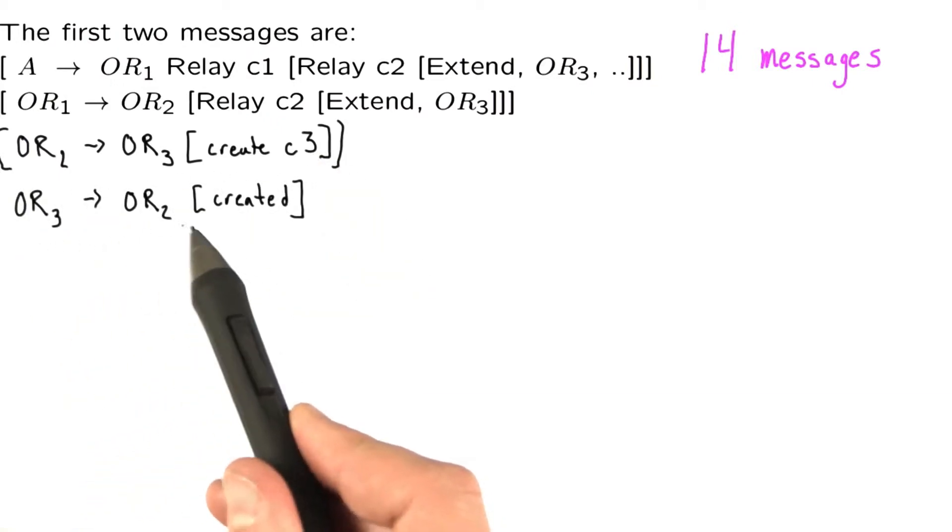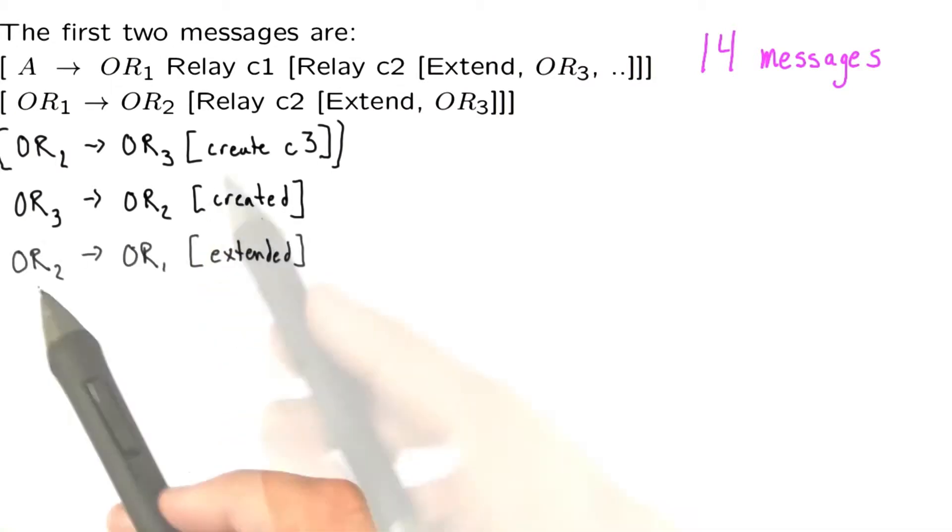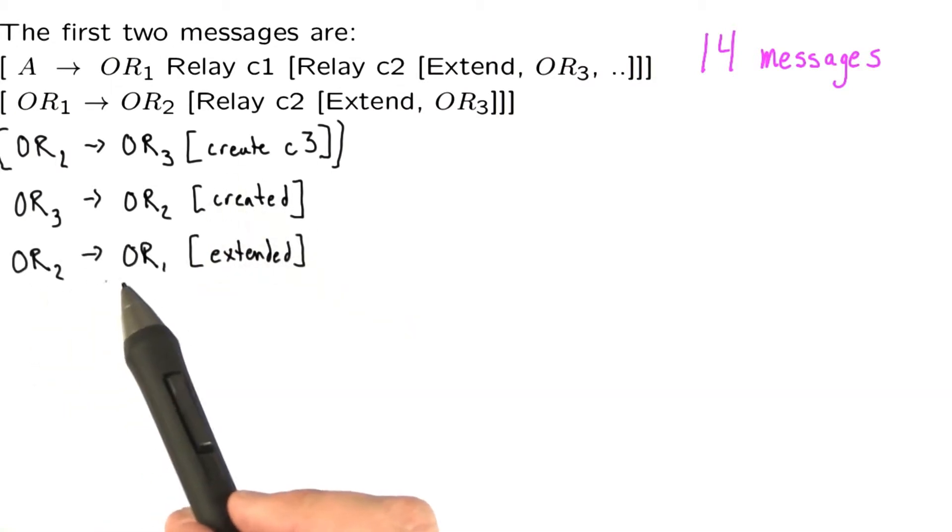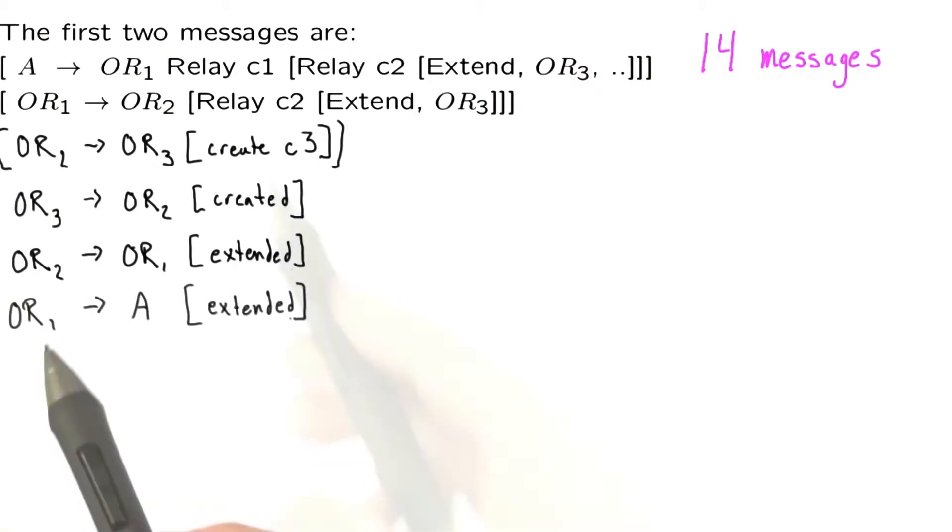OnionRouter3 responds to OnionRouter2 saying I've created it. OnionRouter2 responds back to OnionRouter1 saying I've extended. OnionRouter1 responds back to Alice saying that I've extended.